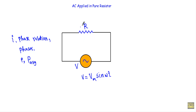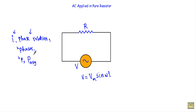I will divide the topic into two separate parts. In the first part, I will talk about current I and the phase relationship of the alternating voltage. In the next part, I will show you the phasor relationship, the instantaneous power, and the average power of this circuit.